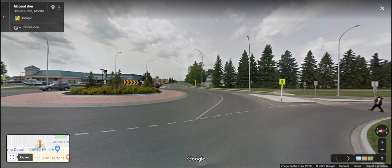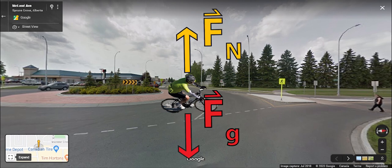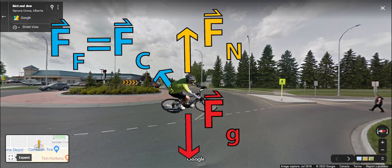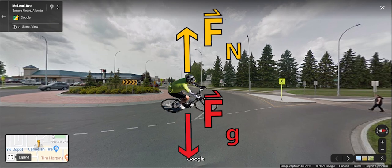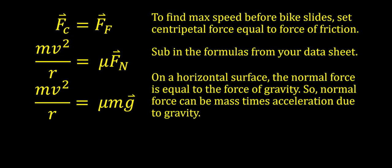But how do we calculate the normal force? Looking at a free body diagram of the bike viewed from the side: there's a force of gravity acting downwards, and because it's on a horizontal flat surface like a road, there's a normal force pointing upwards — those two forces are exactly the same size. So the normal force on a horizontal surface equals the force of gravity, meaning we can substitute mass times acceleration due to gravity in place of normal force.